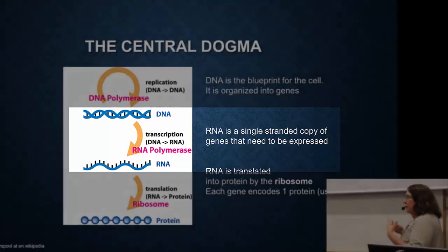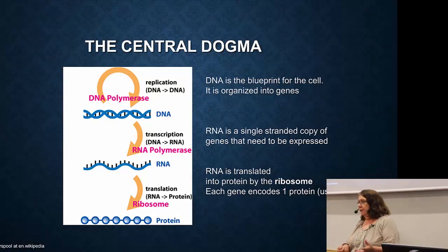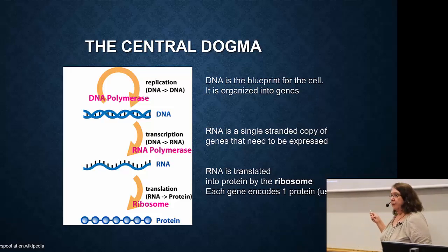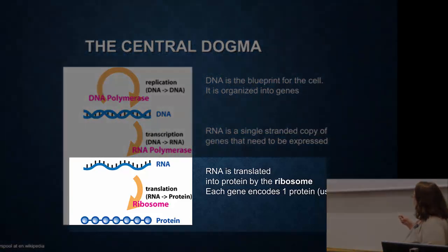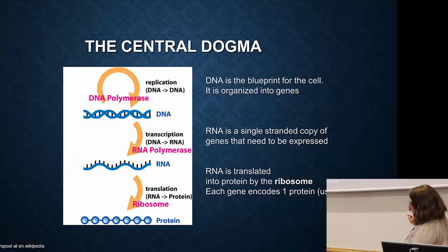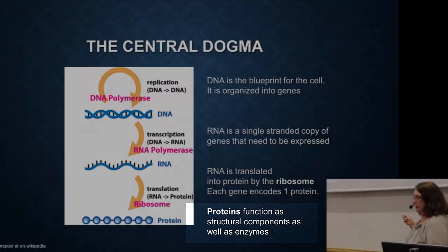Your DNA in all your cells is identical, but in your liver cells, some genes are expressed for liver functions, while in your eyeball, different genes are expressed. The DNA is all the same, but the RNA will be different. RNA then goes to the ribosome, where it brings the instructions to make proteins. Proteins function both as structural components and as enzymes in the cell.